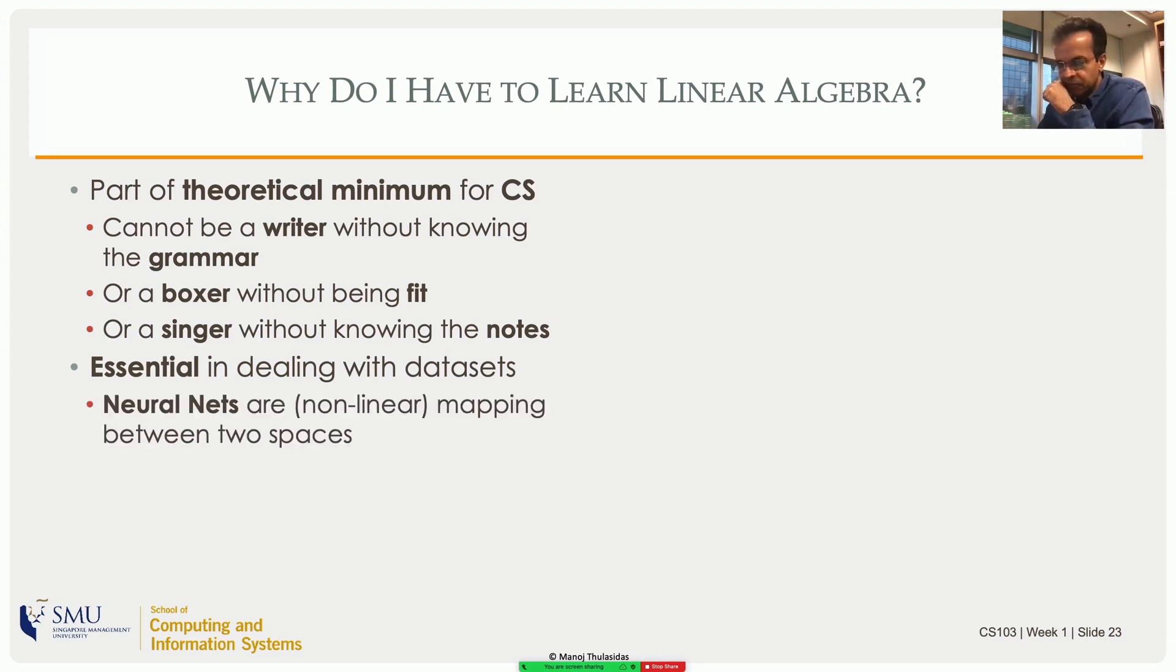For instance, if you look at the formulation of neural networks, it looks like a linear algebra kind of formulation. Neural network is actually a non-linear mapping of one vector to one vector, and that can be expressed in terms of the jargon and the machinery of linear algebra.